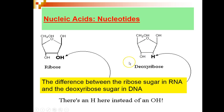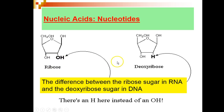The five-carbon sugar can be of two forms. In RNA, the five-carbon sugar is called ribose. In DNA, the five-carbon sugar is called deoxyribose.